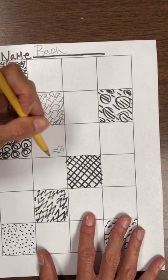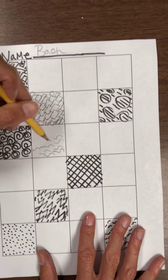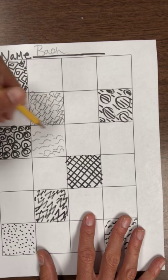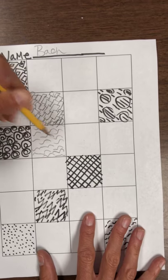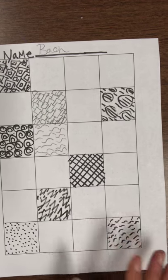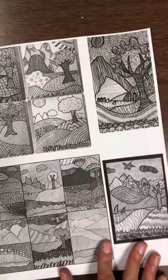When you are finished with your texture worksheet then you're going to put your texture worksheet to the side and start thinking about what kind of landscape you want to do and what is going to be in the foreground, middle ground, and background.